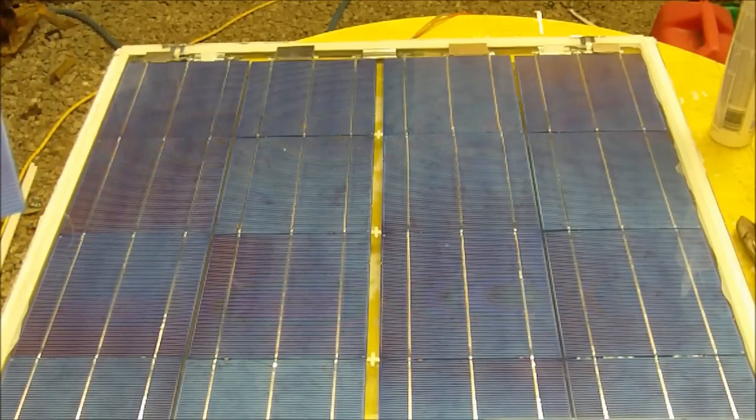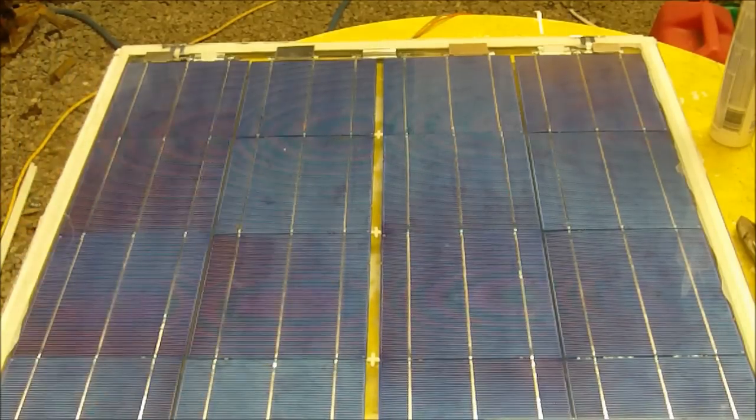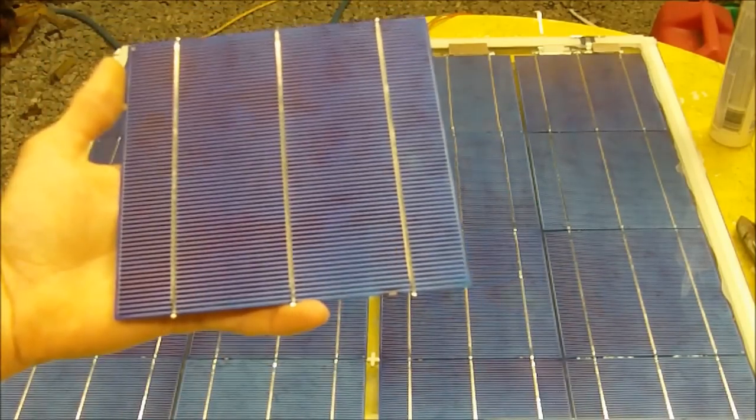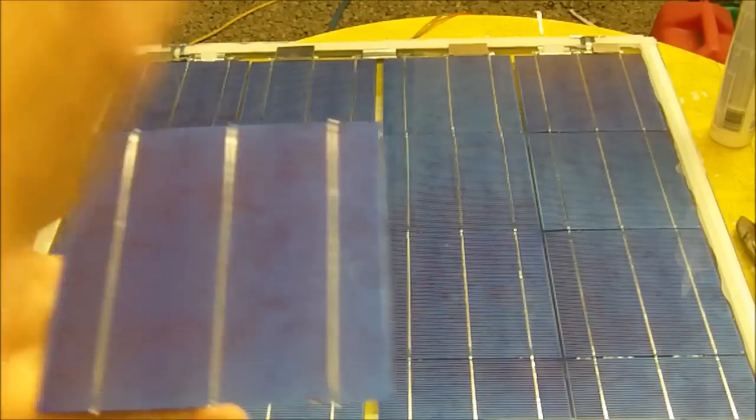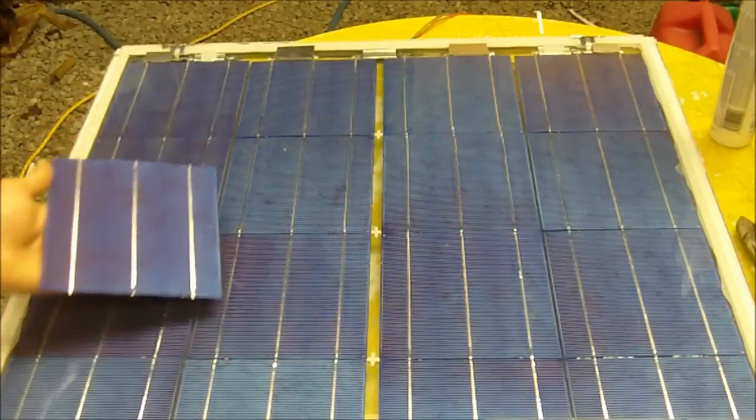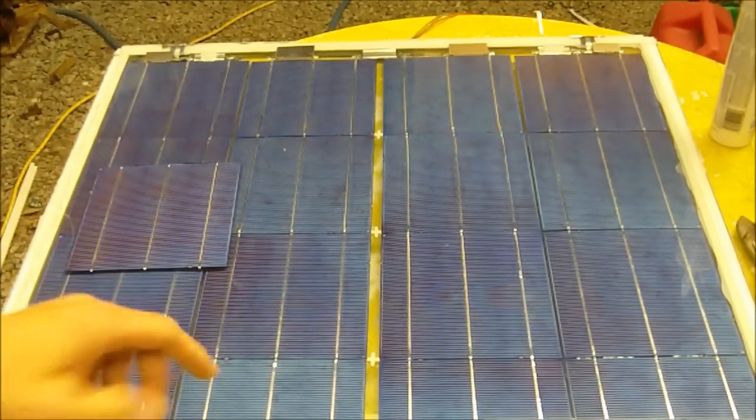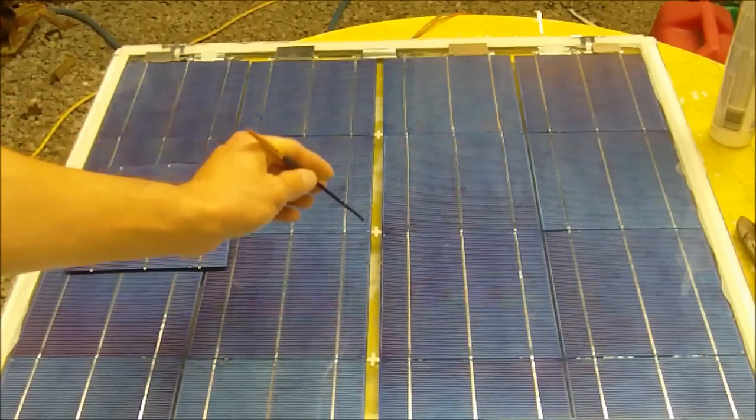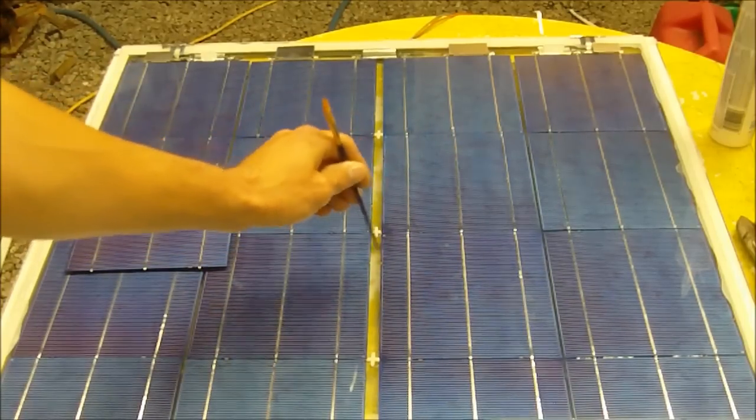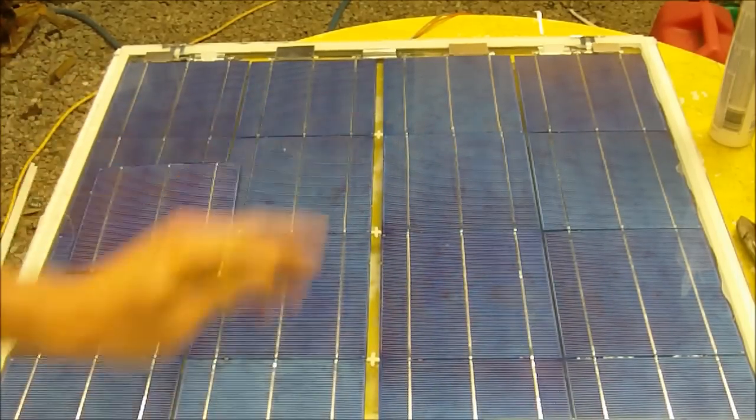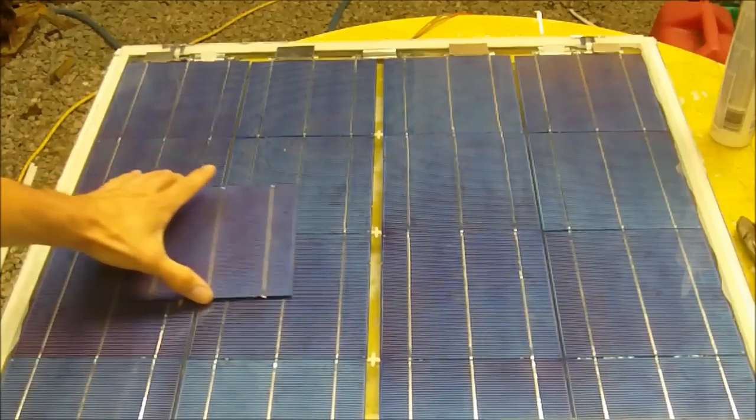Basically, a solar panel like this one is made up of solar cells which are connected in a series circuit and a type of enclosure. This solar panel here is just two pieces of glass bonded together to seal in the cells and keep them dry.